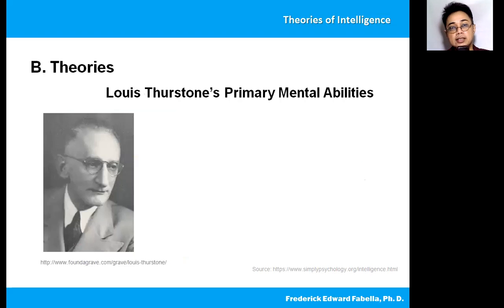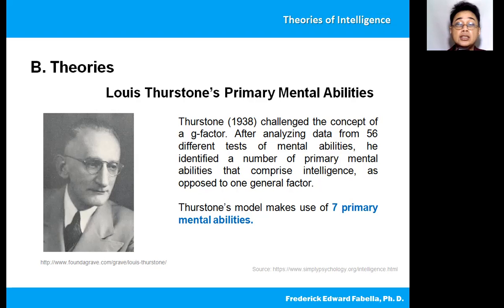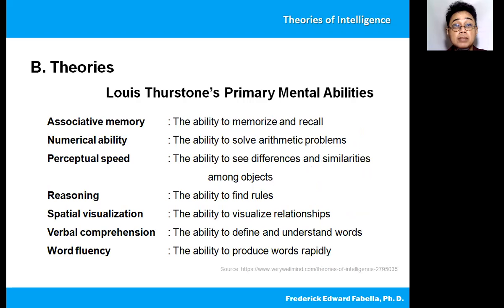Let's consider another theory, this one by Louis Thurstone, who called it primary mental abilities. In 1938, Thurstone challenged the concept of the G factor. After analyzing data from 56 different tests of mental abilities, he identified a number of primary mental abilities that comprise intelligence, as opposed to one general factor. In Thurstone's model, he makes use of seven primary mental abilities: associative memory, numerical ability, perceptual speed, reasoning, spatial visualization, verbal comprehension, and word fluency.